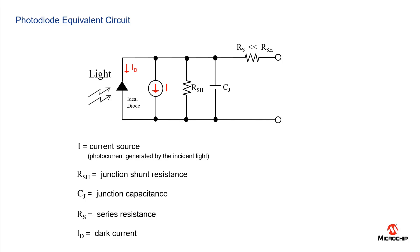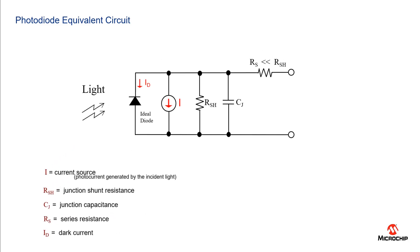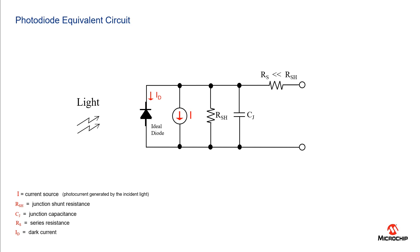The ideal current source represents the photocurrent, for example the current generated by the diode in response to incident light. Note that the direction of the photocurrent corresponds to the current that flows from the diode's cathode to the diode's anode.